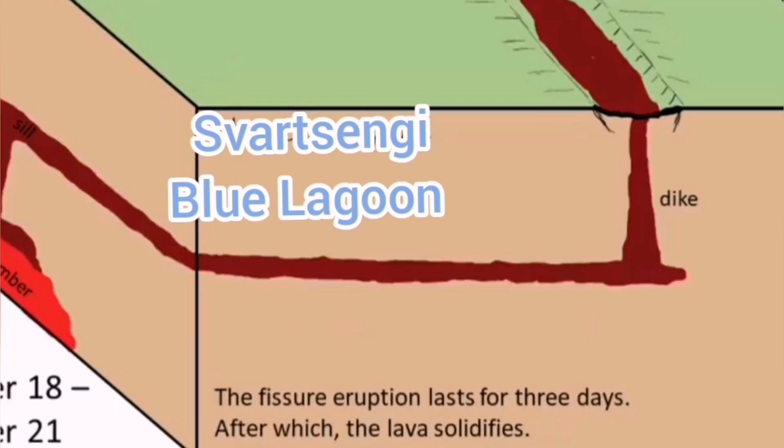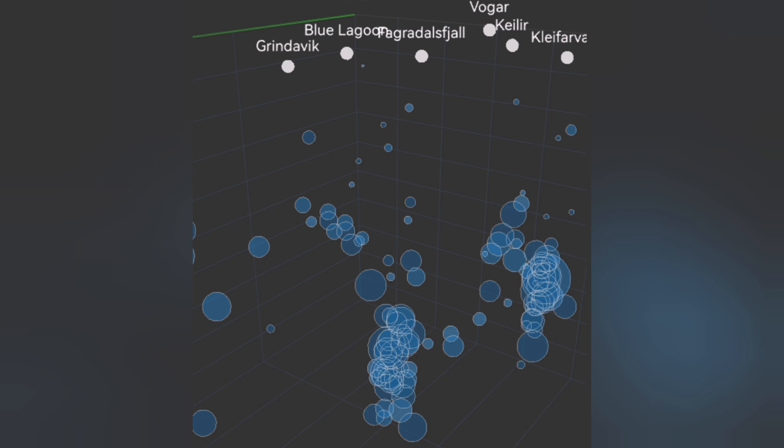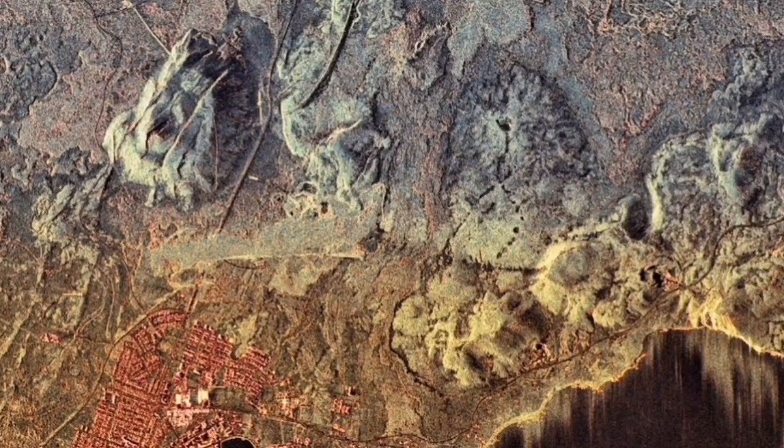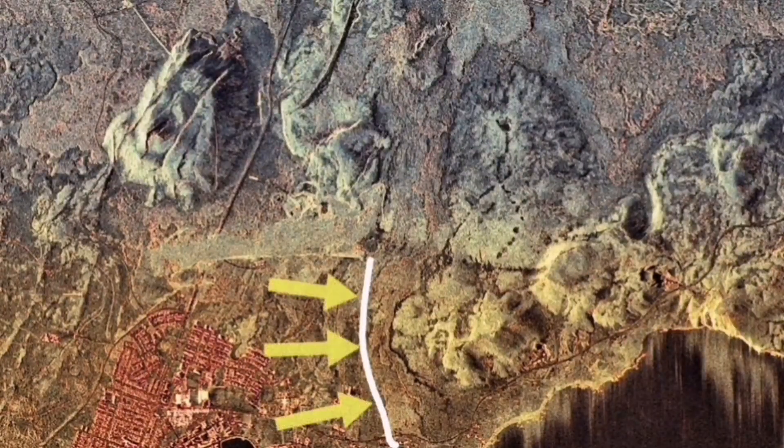Based on what we see, the sill will lead to an eruption in that area at that angle. And there is a good chance that we may have also recurrence of what we saw in the January eruption around Grindavik.